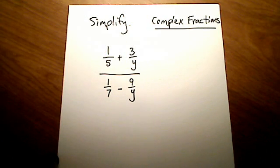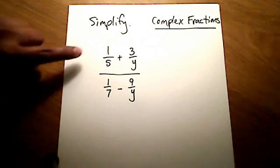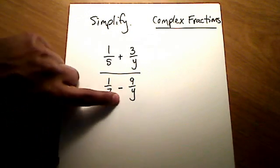That's what makes them complex. Well, the first method I'm going to show you, what I guess the book calls method one, is to tackle these two fractions. And when I say two fractions, I mean these two up top and these two on the bottom separately.